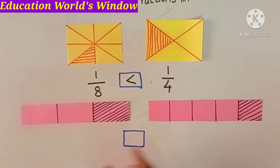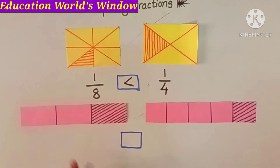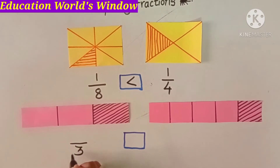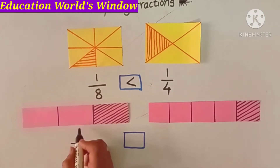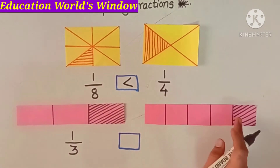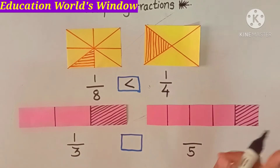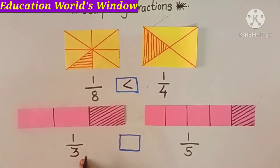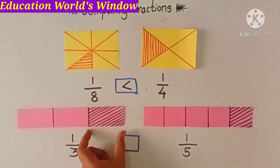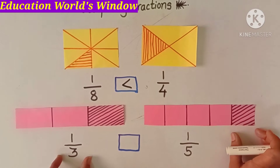Let's see another example. Here there are two strips. For the first strip, the colored part is 1 out of 3 parts, so the fraction is 1 upon 3. For the second strip, the total parts are 5 and the colored part is 1, so it is 1 upon 5.